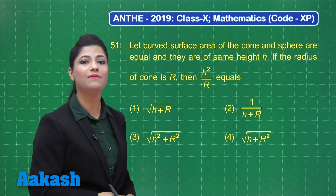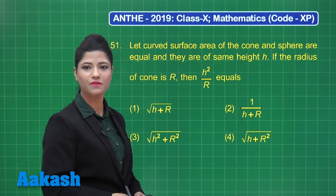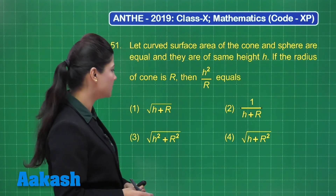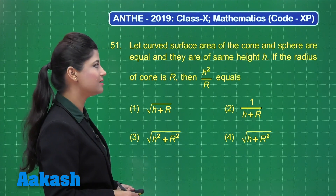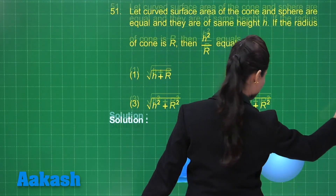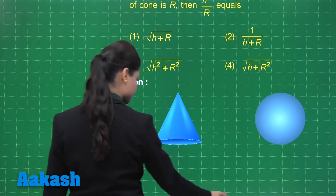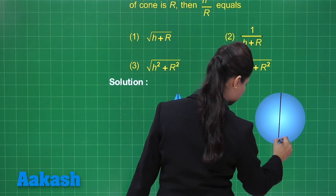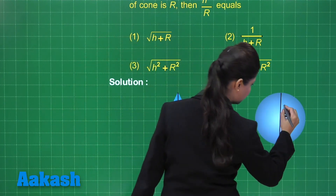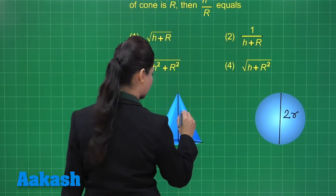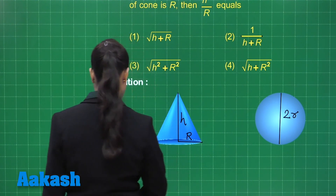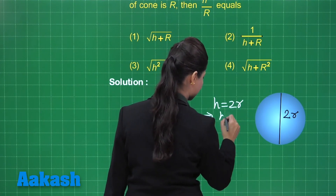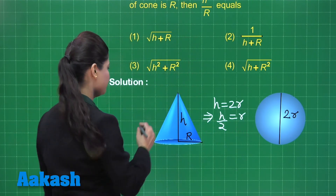Let's take the next question. The curved surface area of a cone and a sphere are equal and they are of the same height. If the radius of the cone is capital R, then h² upon capital R equals what? The cone and sphere have the same height h. Let the sphere have radius small r, so its diameter is 2r, meaning h = 2r, so r = h/2.